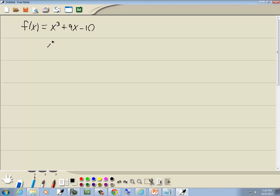Now to find the zeros, it means we set this equal to 0 and we solve it. So we got x to the third plus 9x minus 10 equal to 0.